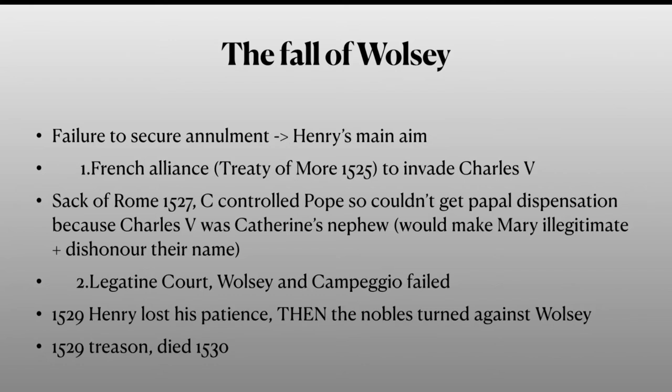In order to get an annulment, Henry needed permission from the Pope, and in order to get permission from the Pope, Henry needed control of Charles V — but this was impossible. Charles V was actually Catherine of Aragon's nephew, which meant he would never give permission for an annulment because that would make his niece Mary illegitimate and would bring dishonour to their name. After the Sack of Rome in 1527, Charles had control of the Pope, meaning he had complete control over whether Henry would get an annulment.